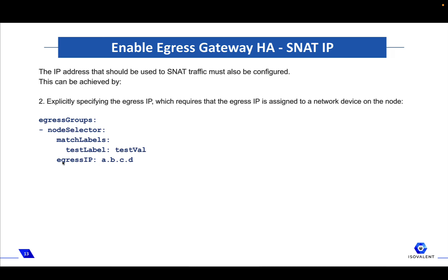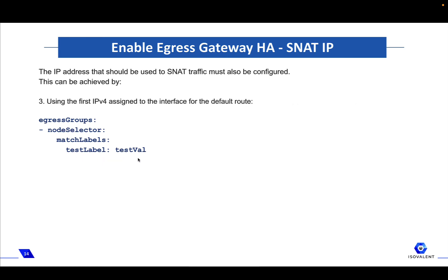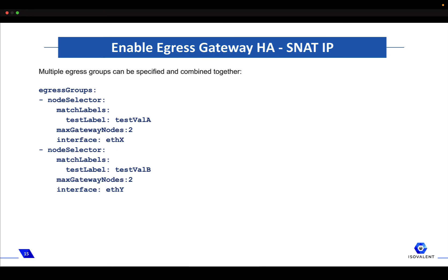So in this case you would use the egress IP with a specific IP address. Or you would plainly use the first IPv4 address assigned to the interface for your default route on your node. You can also specify multiple egress groups which can be combined together, and you can use different node selectors within an egress group to match different labels which may have specific configurations for that given group of nodes.